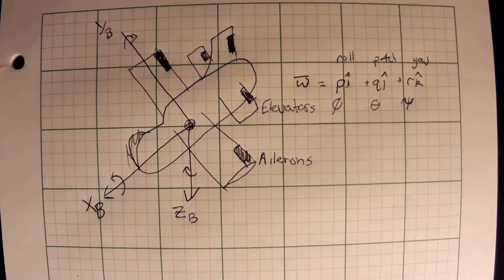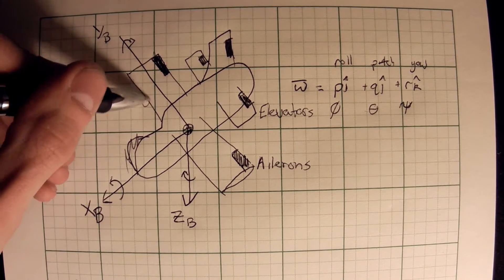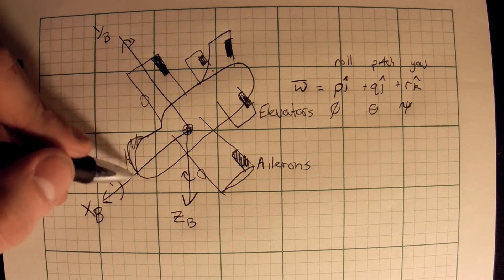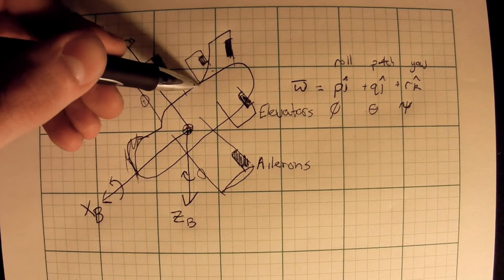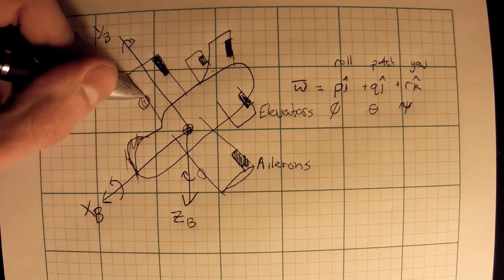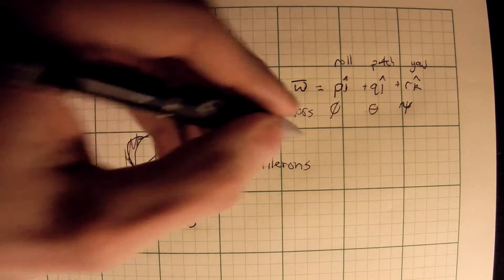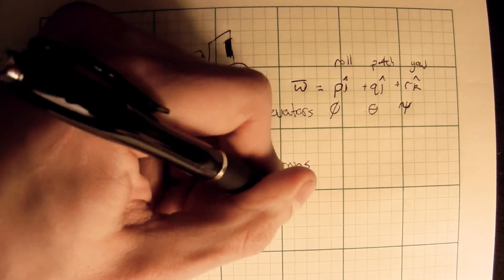One other thing that controls the airplane is the engines. Depending on the aircraft, some have their propeller in front, some have them on the wing, and some have engines at the rear. For this class, we'll just place our engines here. The engines control the thrust, which in this course is given the symbol tau.